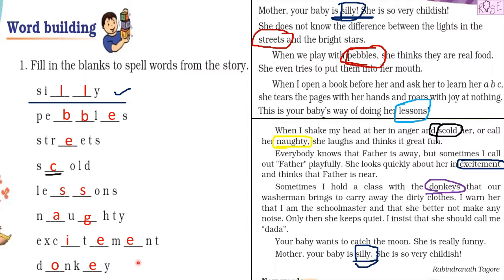We completed the exercise: silly, pebbles, street, scold, lessons, naughty, excitement, and donkey. We'll meet next time with another fun activity and a story. Okay, bye bye!